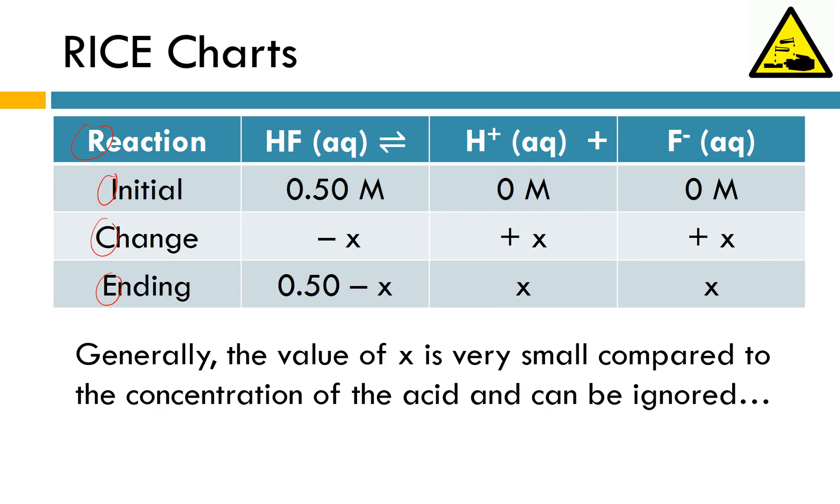If you're thinking ahead, you might realize that this is going to require the quadratic equation to solve. We are not going to use the quadratic equation. Luckily, the value of X is generally so small compared to the concentration of the acid, it can be ignored. So if I was going to write my Ka expression, I'm going to have H+ times F-, so I'd have X times X, or just simply X squared. And then I'd have 0.50 minus X, but X is so small, I can get rid of it. And then Ka was provided earlier, so this is actually a number. So now I'm just solving for X squared. And when I come up with X, that's going to be equal to the concentration of hydrogen ions and also the fluoride ions.